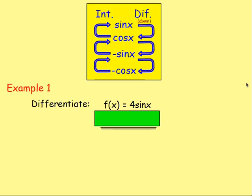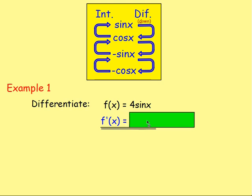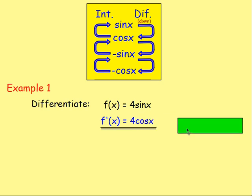Let's try some examples. Example one: Differentiate f(x) = 4sin x. We can differentiate that straight away. We're going to have f'(x) equals — because 4 is just a constant, it's going to stay as 4. Differentiating sin, if you differentiate sin it goes to cos. So we'd have 4cos x, and it's as simple as that.